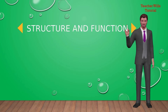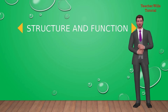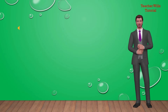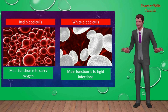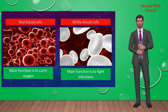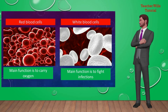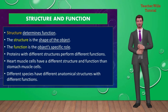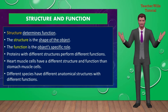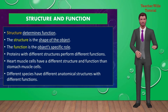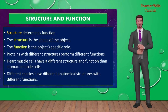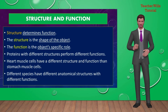The structure and function: at every step of the biological hierarchy, structure and function are connected. For example, different cells have specific components that help them carry out their duties. Red blood cells, which carry oxygen, are formed differently than the white blood cells that fight infection. The relationship between structure and function is also apparent in entire organisms and the physiological systems that serve them. Structure determines function. The structure is the shape of the object, and the function is the object's specific role. Proteins with different structures perform different functions. Heart muscle cells have a different structure and function than stomach muscle cells. Different species have different anatomical structures with different functions.